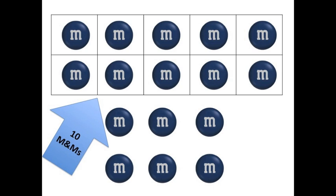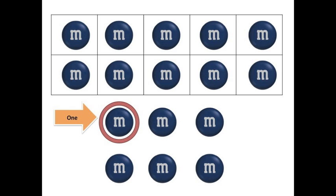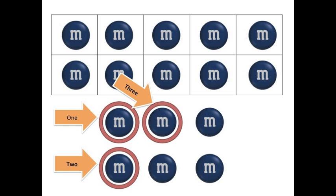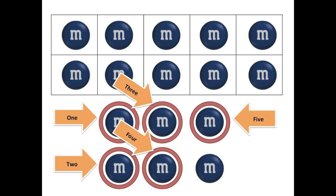By moving each M&M into one of the squares, I know that if I fill all those squares, I will have 10 M&Ms. So the only thing I have left to do is count the M&Ms left over. There's 1, 2, 3, 4, 5, 6. This is actually pretty easy. I think we have it.